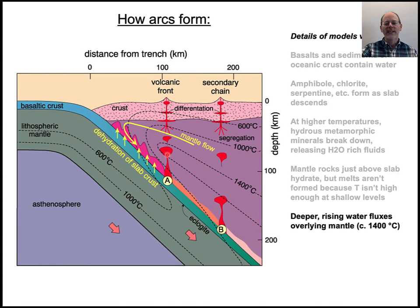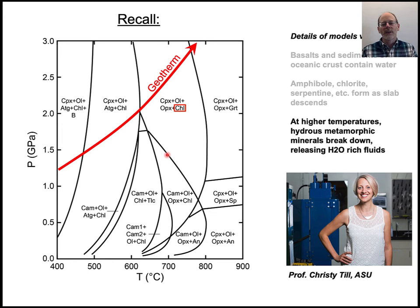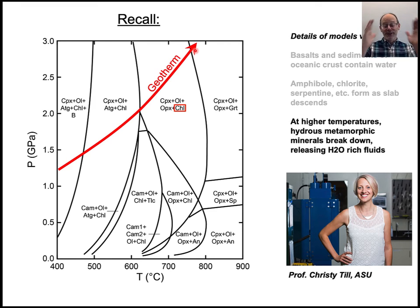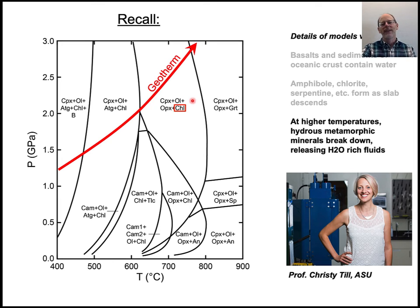What exactly is that melting process? It turns out there were experiments done at MIT by Christy Till — now a professor at Arizona State University — which showed it's the breakdown of chlorite at very high pressures and temperatures, approaching 100 kilometers depth, where the arc sits over the top of the subducting slab. It seems to be this chlorite breakdown reaction that releases the fluids that then percolate up and cause the melting.